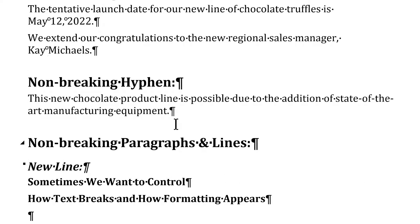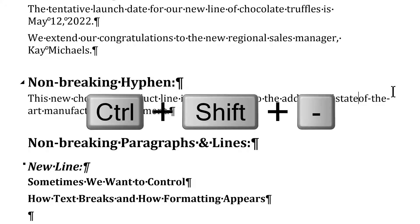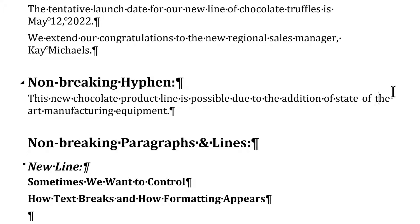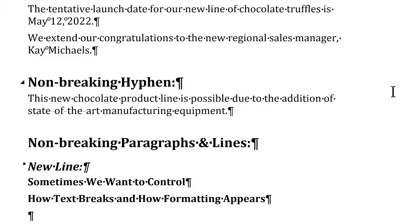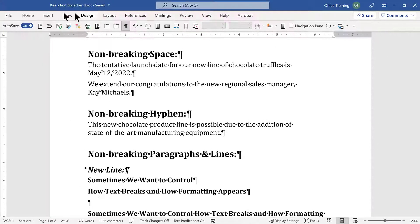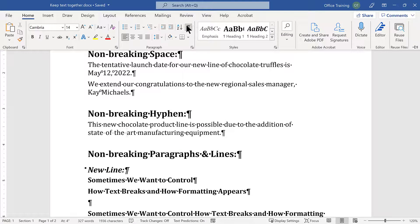The non-breaking hyphen works very much the same way. For this phrase 'state of the art,' we simply have standard hyphens — sometimes called soft hyphens — and we're going to put in a non-breaking hyphen. I'll delete those hyphens and replace them using Ctrl+Shift+Hyphen, and continue for the entire phrase. When Show/Hide is enabled, these hyphens look slightly different, but they will display and print the same as a regular hyphen in the final product.